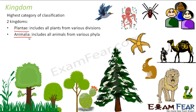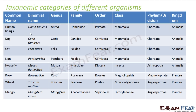Please make sure you understand these taxonomic categories because they are very important. Now let us look at the scientific classification of some common organisms. For example, for human beings, the binomial name is Homo sapiens — written in italics. The genus is Homo, family is Hominidae, order is Primata, class is Mammalia, phylum is Chordata, and kingdom is Animalia.